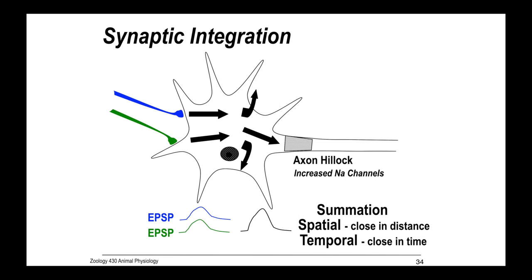Temporal is another kind of summation, the repeated stimulation. It could just be one, but if they're close in time, they can sum and again, help this neuron reach threshold.